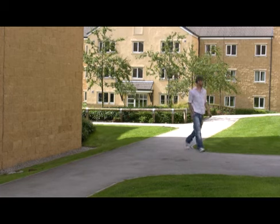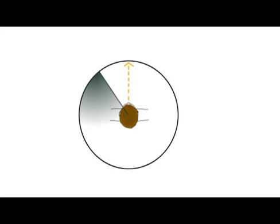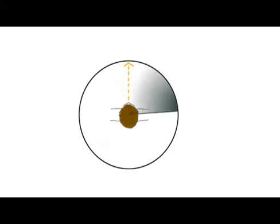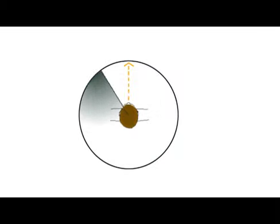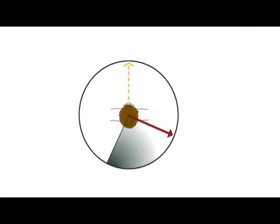Vibrations indicate the direction the user should walk to. To associate a direction to the vibrations, one has to imagine a radar that is constantly rotating around them. A regular pulse indicates that the radar scans the front of the user. A second, distinct vibration communicates the direction to travel.